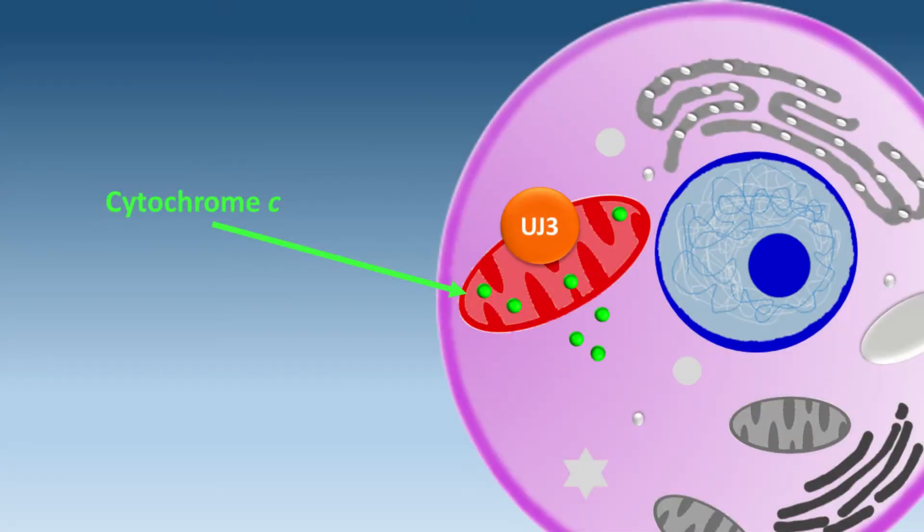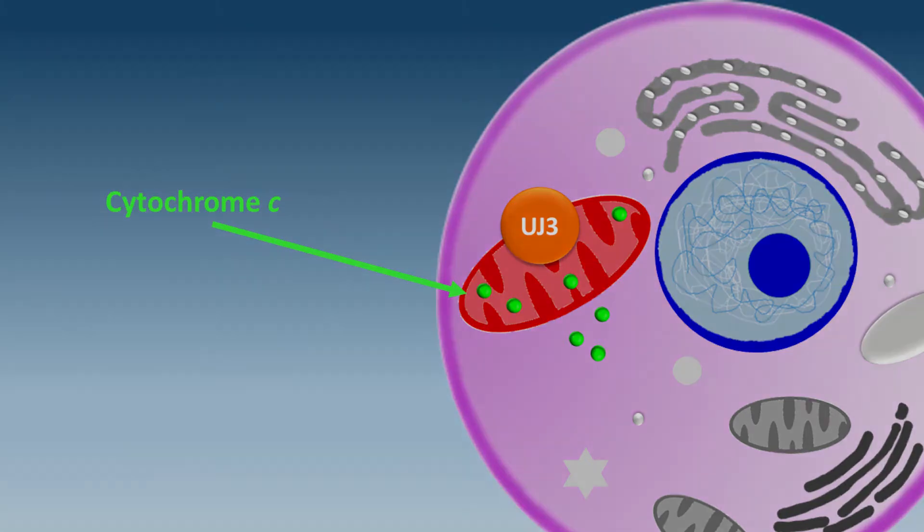The complex we tested, UJ3, appears to have another effect on the cell, causing the mitochondria to release a protein called cytochrome C, which is shown by the green dots in the graphic on the right.